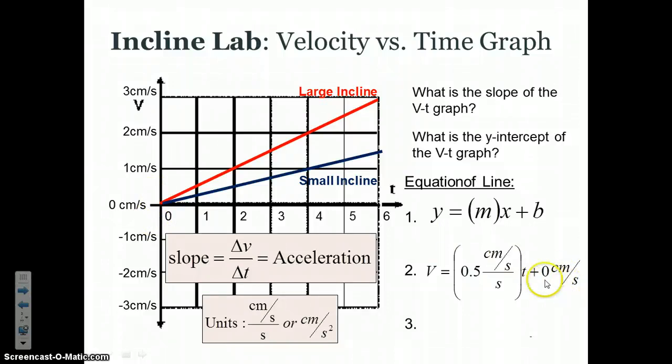And all of the groups got numbers close to zero, and we said that it should be zero, logically, because when you started your spinner at time zero, the spinner started from rest, so it would have a zero velocity. So logically, we can conclude that the y-intercept is insignificant, or zero, because for a zero time, you would have a zero velocity.